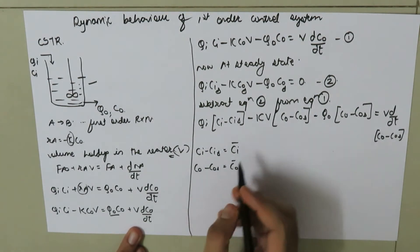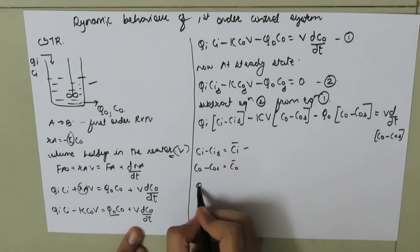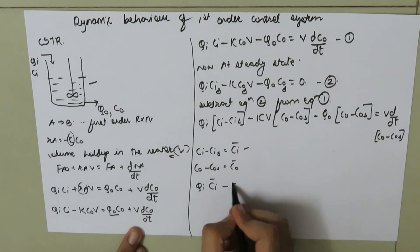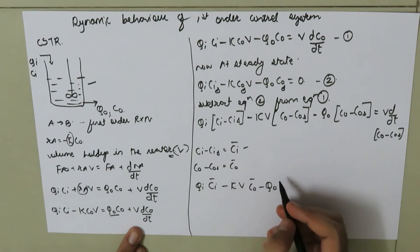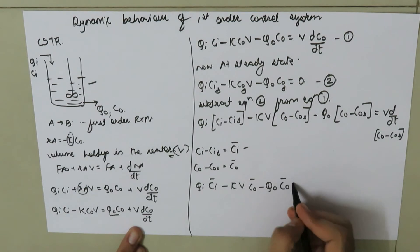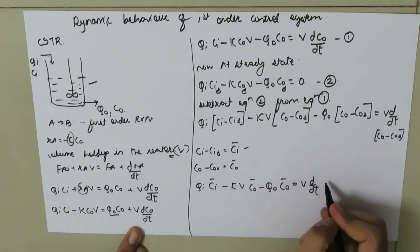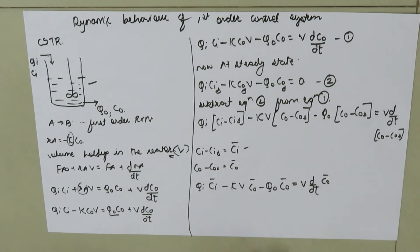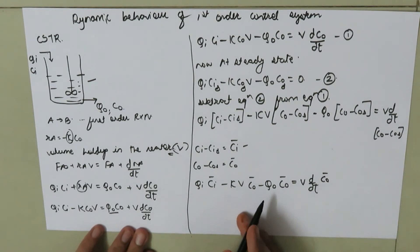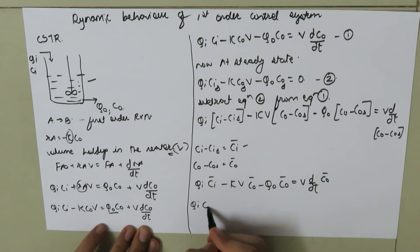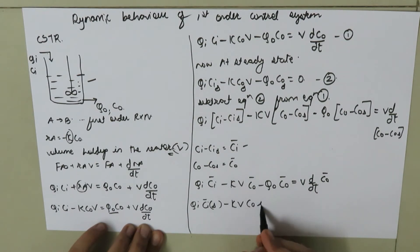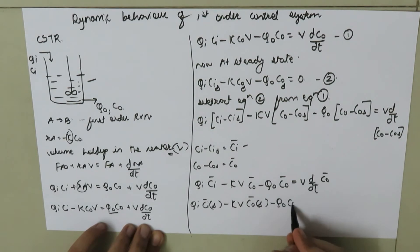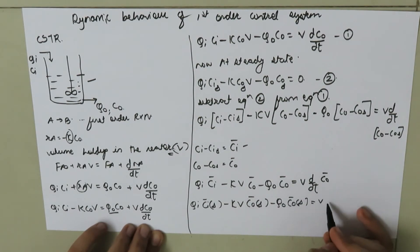Substituting the deviation variables into the equation: QI times CI-bar minus KV times CO-bar minus QO times CO-bar equals V times d(CO-bar) by dT. Taking the Laplace transform of both sides: QI times CI-bar(S) minus K times V times CO-bar(S) minus QO times CO-bar(S) equals V times S times CO-bar(S).